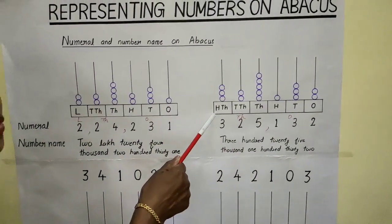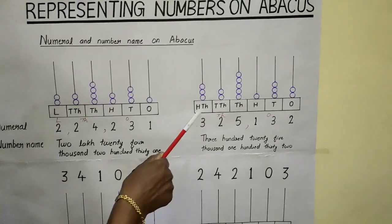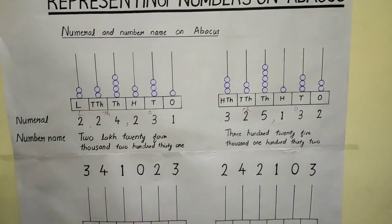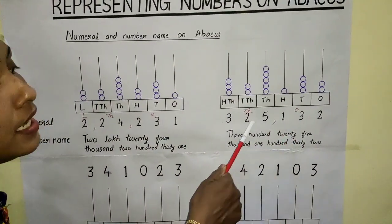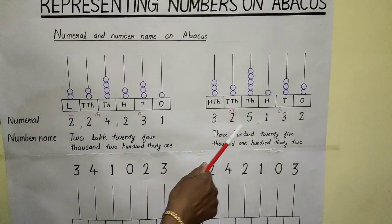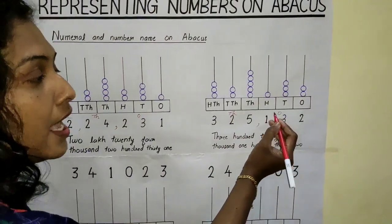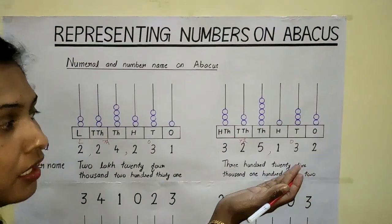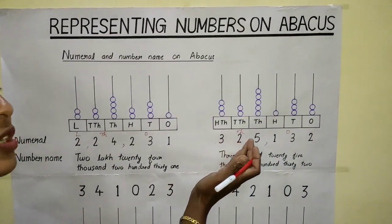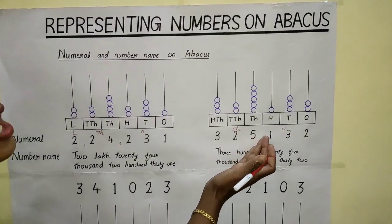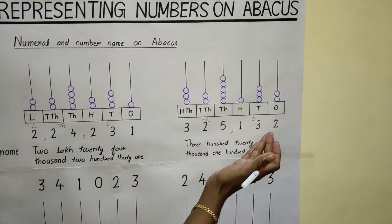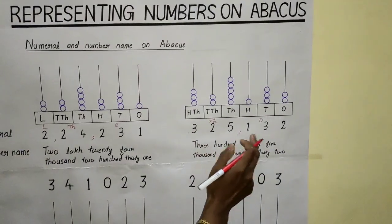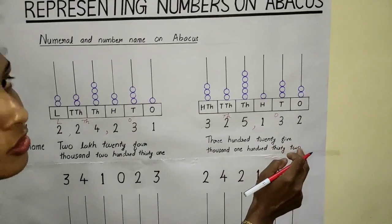You listen here — hundred thousand is the place related to the international numbering system. In the international numbering system, the first period has three digits and the next period also has three digits. The first is the one's period and the next is the thousands period. How many thousands are here? Three hundred twenty-five thousand. How many ones? One hundred thirty-two. So the number name is: three hundred twenty-five thousand, one hundred thirty-two.